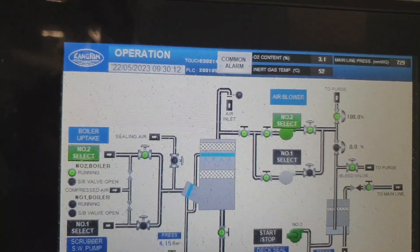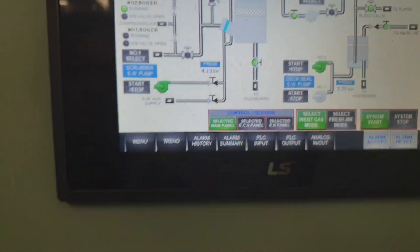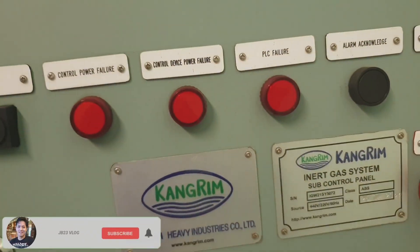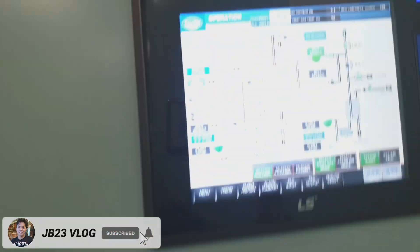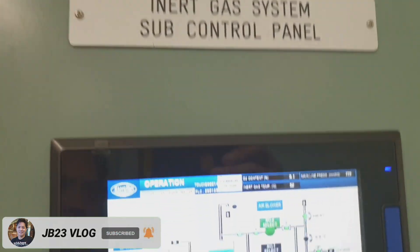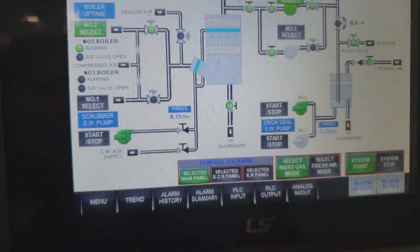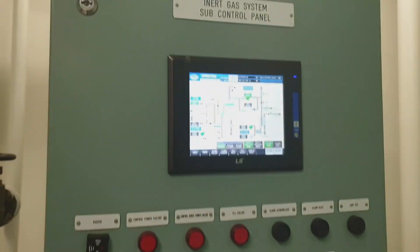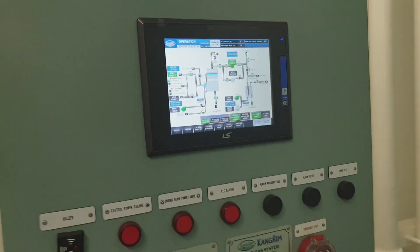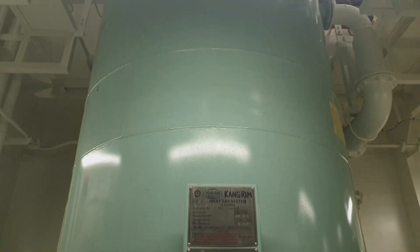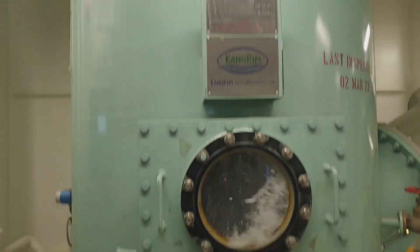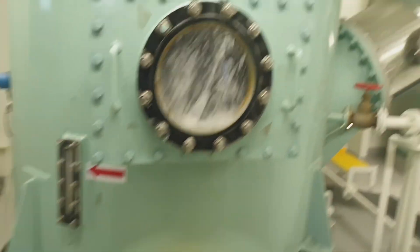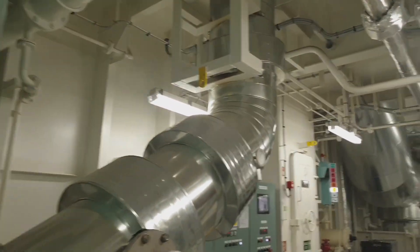So this is the sub-control panel of the inert gas system. As you can see, there is an emergency stop in case for emergency operation or any failure. The system can be stopped from this control panel.